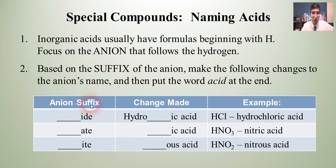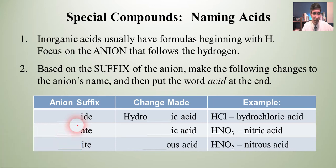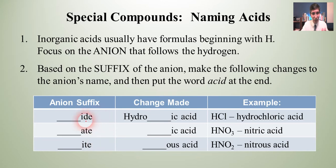There are three suffixes that anions can have. They can have the suffix '-ide', '-ate', or '-ite'. If it ends with '-ide', you're going to apply a specific naming rule.